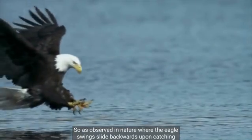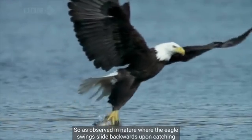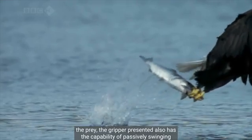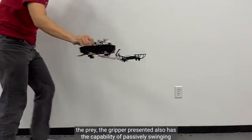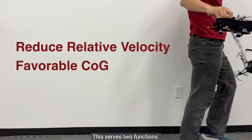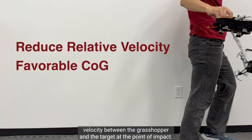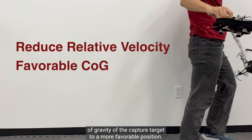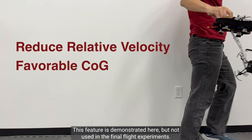So as observed in nature, where the falcon swings its leg backwards upon catching the prey, the gripper presented also has the capability of passively swinging downwards after a successful grasp attempt. This serves two functions. The first is to reduce the relative velocity between the grasping drone and the target at the point of impact. The second is to move the center of gravity of the captured target to a more favorable position. This feature is demonstrated here but not used in the final flight experiments.